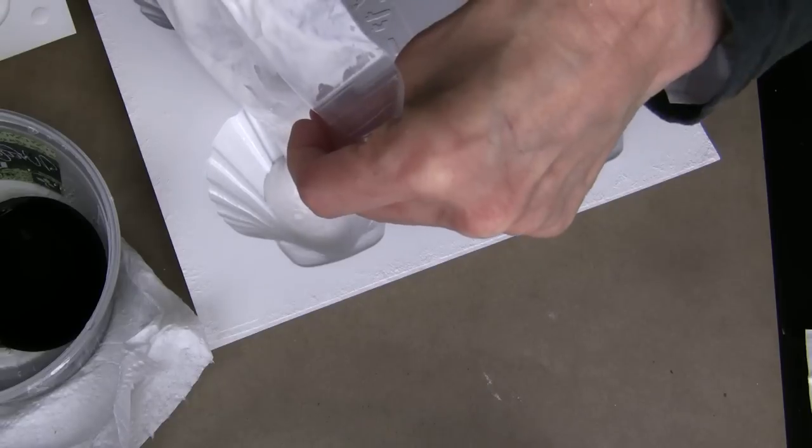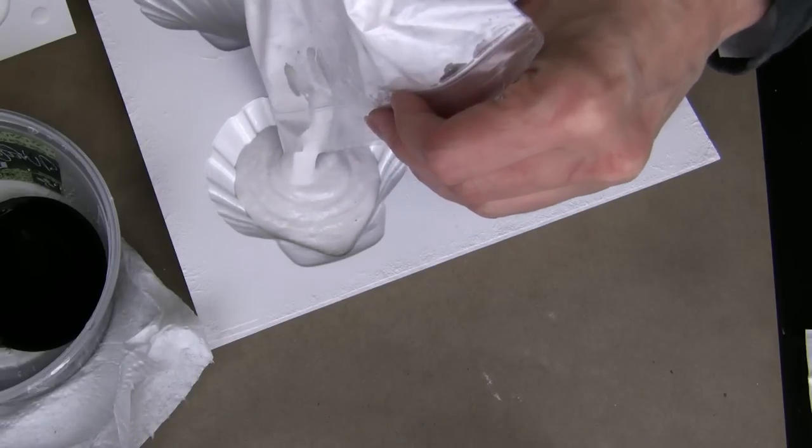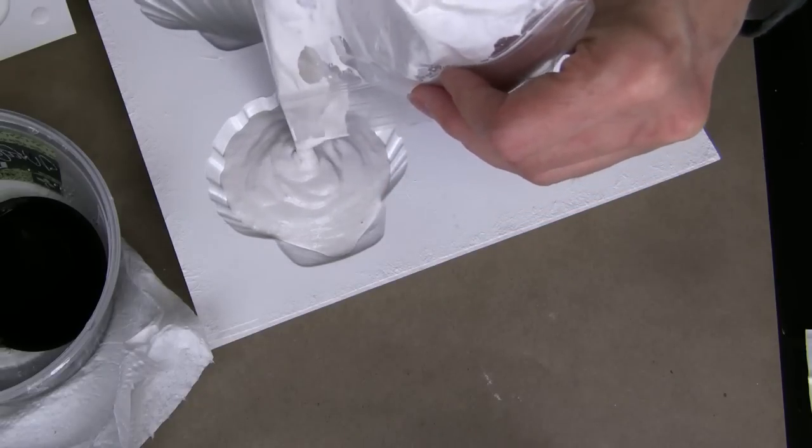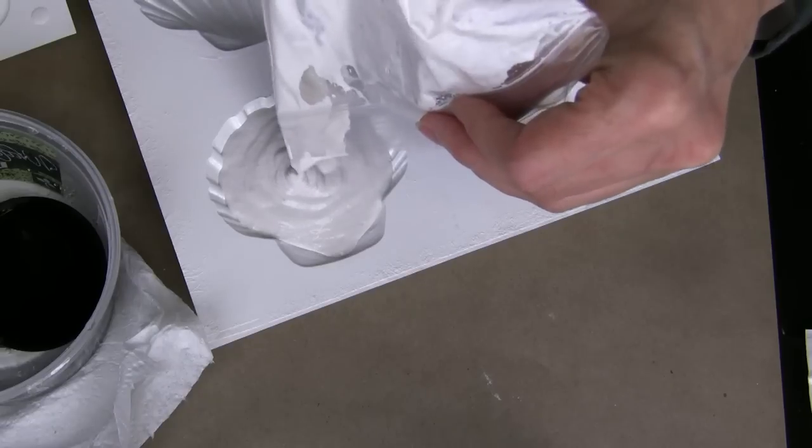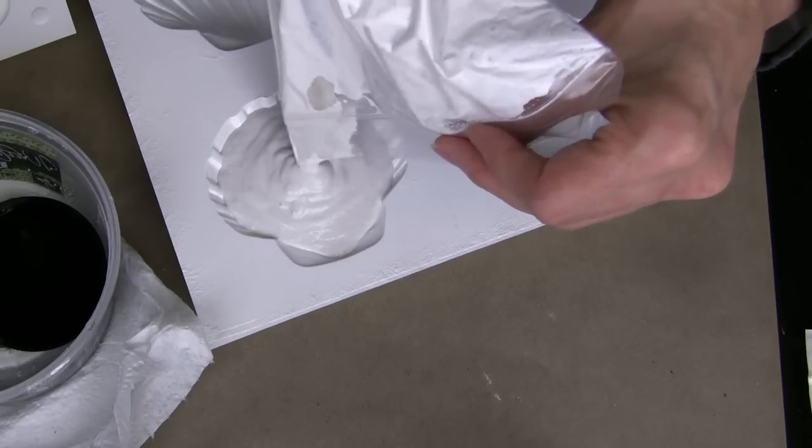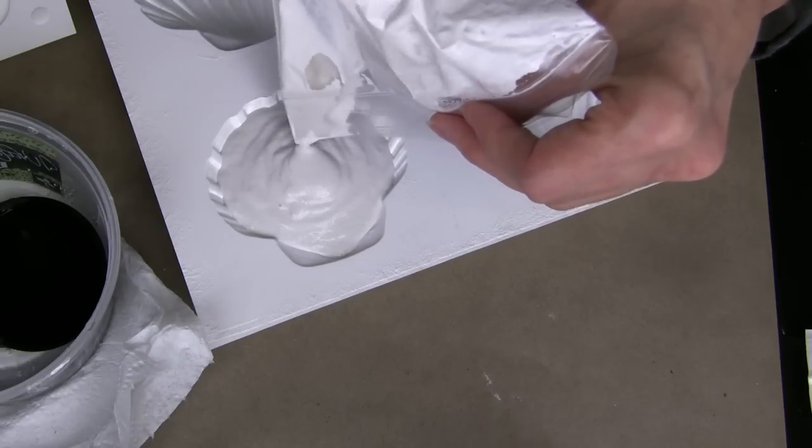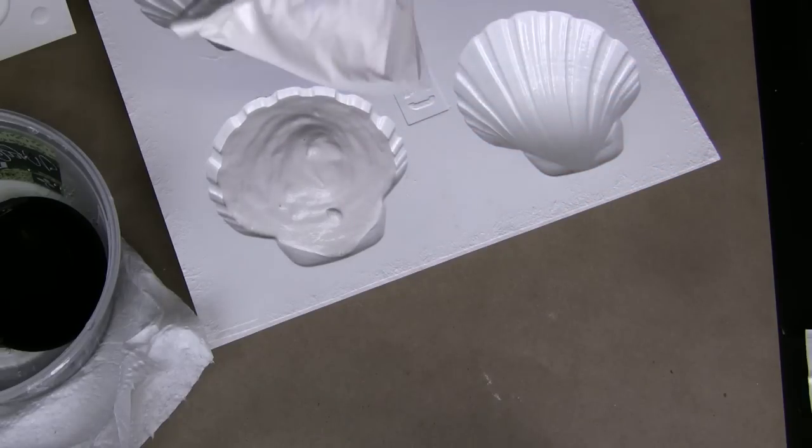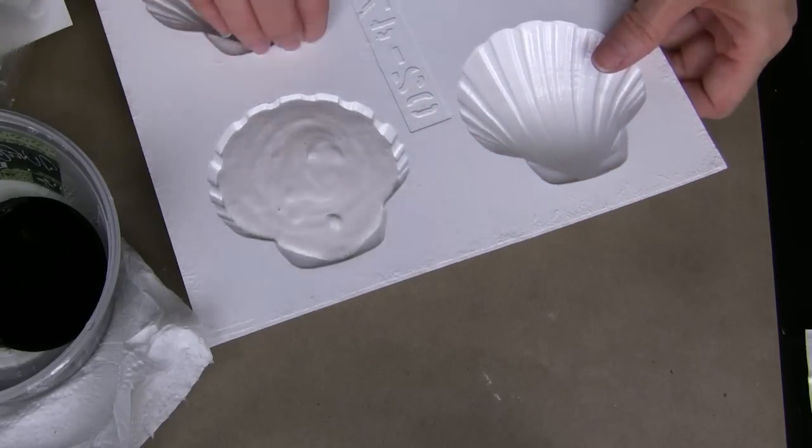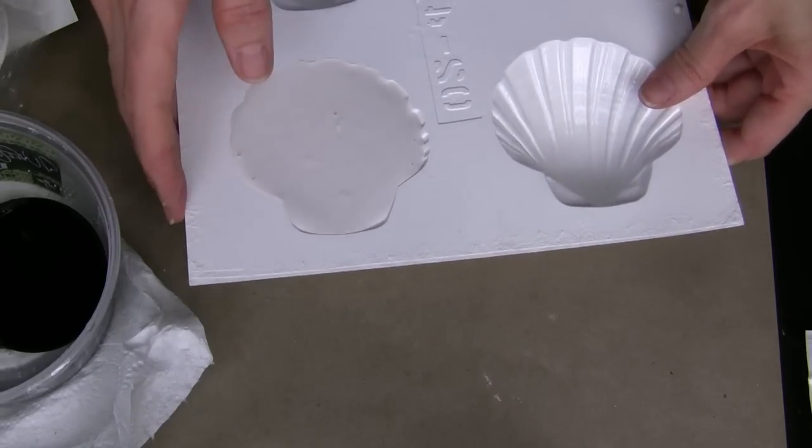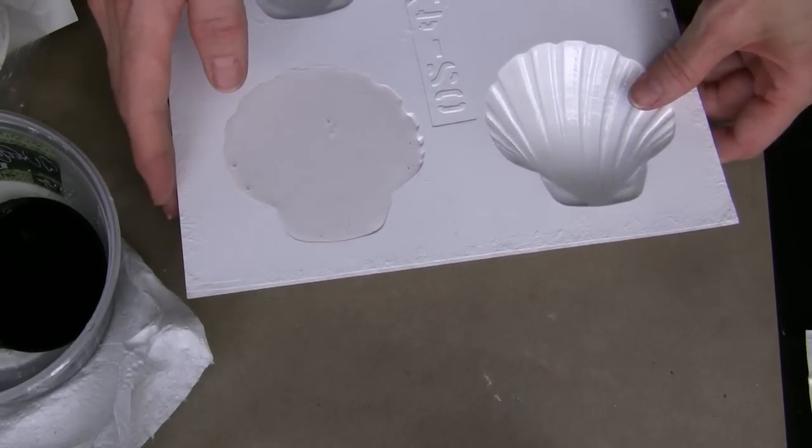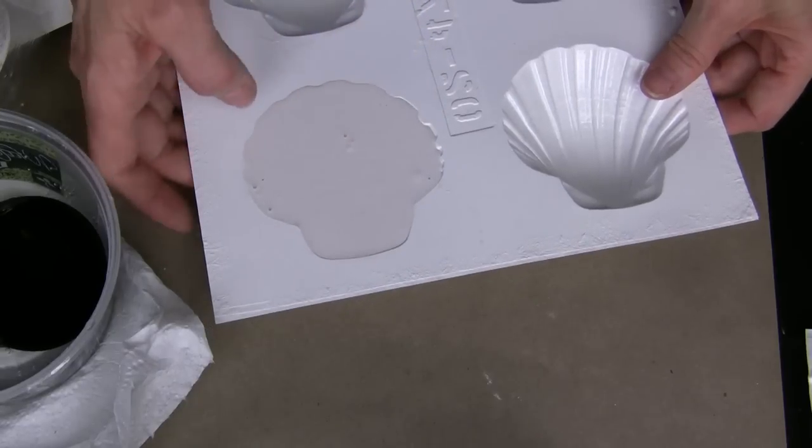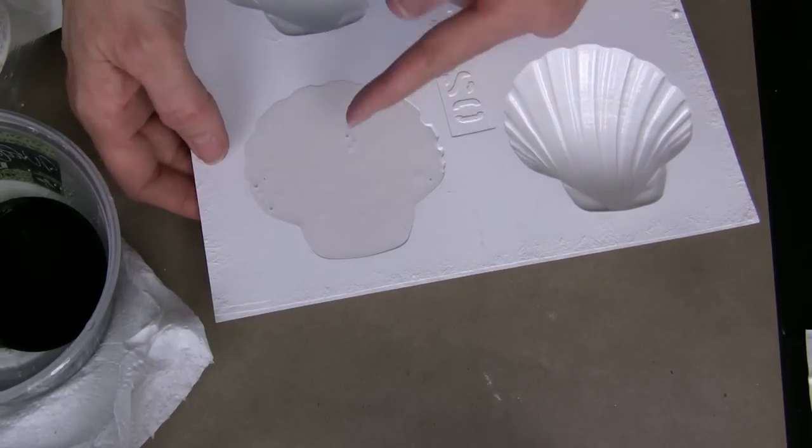And we're going to just pour this right into the mold. When you mix up your cool to cast, you want it the consistency of pancake batter. This is a little bit thicker than I'd like, so I could have always added a little bit more water, but this will be fine. What you want to do is tap this down and make sure that it gets into all of the edges of that mold. Tap on the top and a little on the side. That's going to bring the bubbles to the top.